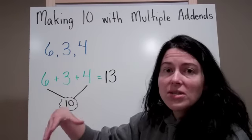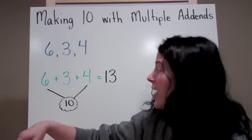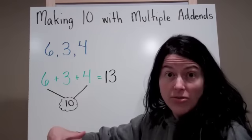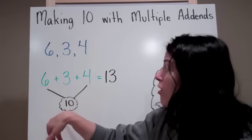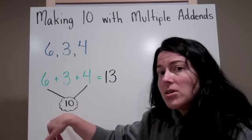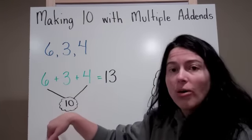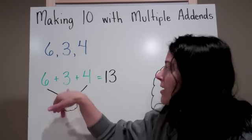So the first thing I want to do is take my friendly pairs of 10 and find them if they actually exist in my problem. In this problem, 6 and 4 make 10. So I already know that I can work from 10. So now I have 10 and I have 3.